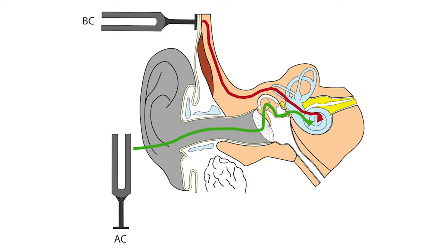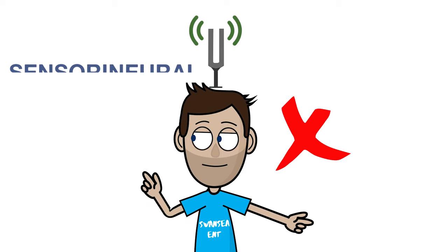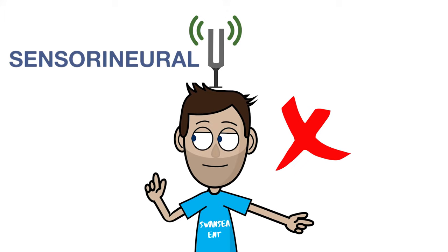Weber's test is a little bit more confusing to interpret. Let's say one ear was positive in Rinne's test, bone conduction was greater than air conduction shown here as a cross in the left ear. If Weber's lateralizes towards the good ear the hearing loss is sensorineural. However if it lateralizes towards the affected ear the hearing loss is conductive.